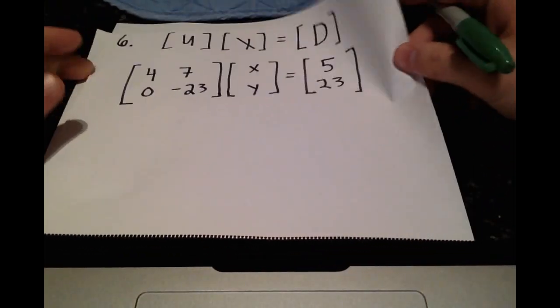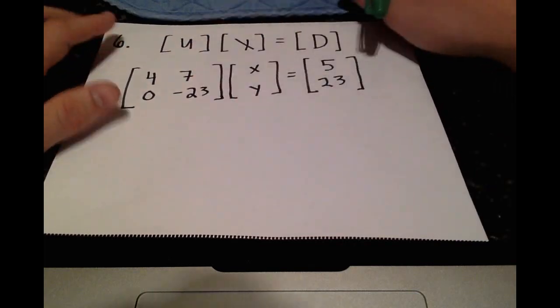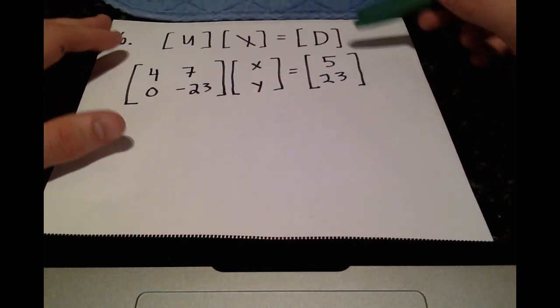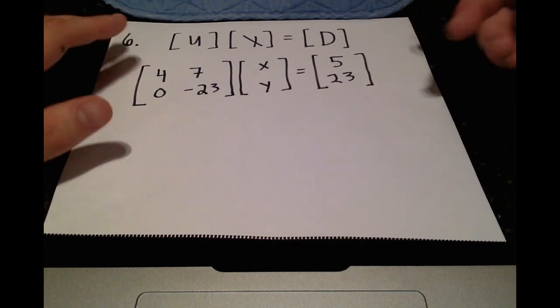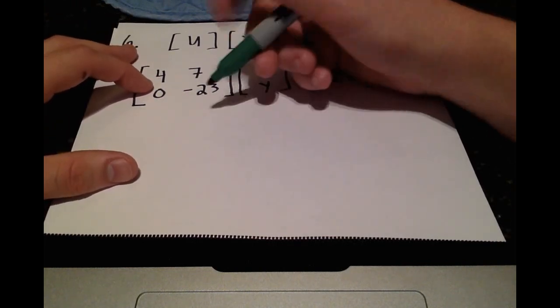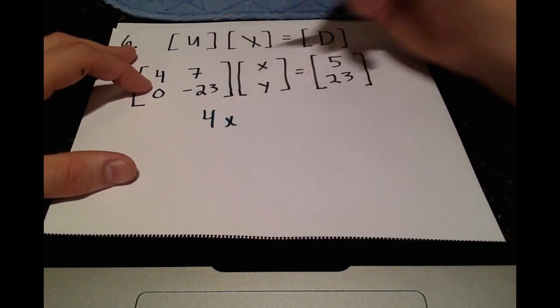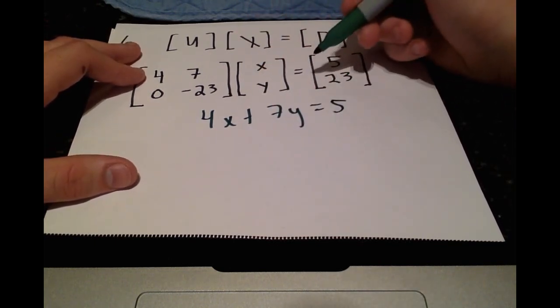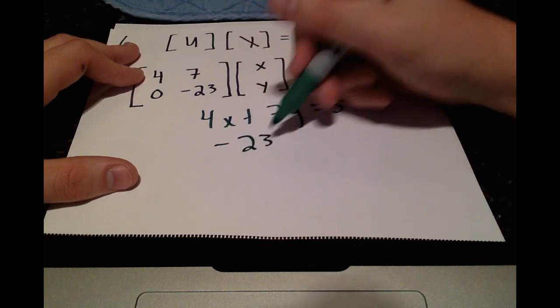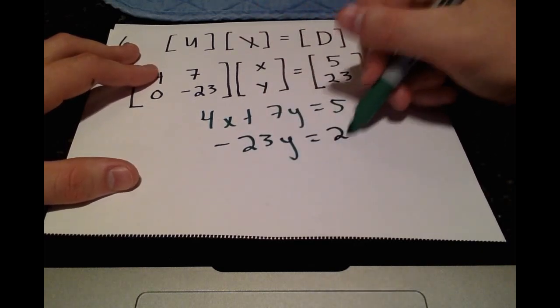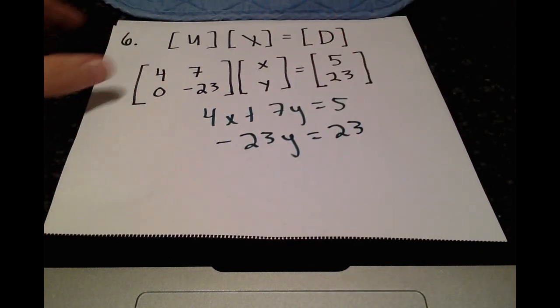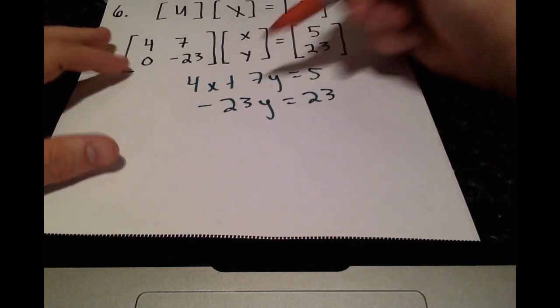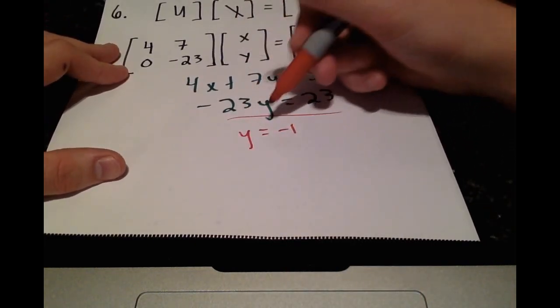Our last step. Almost our last step. Step 6. Which will allow us to find our solution vector X. So we fill in the values that we just got for D, 5, 23. And we do the same thing. Multiply it out. 4 X plus 7 Y is equal to 5, negative 23 Y is equal to 23. OK. You can see pretty easily right here Y is just equal to negative 1.